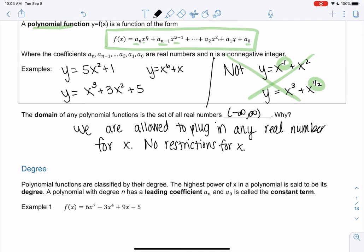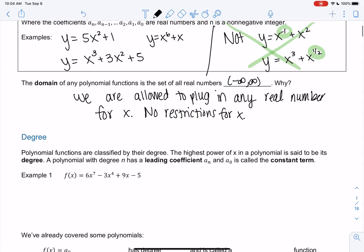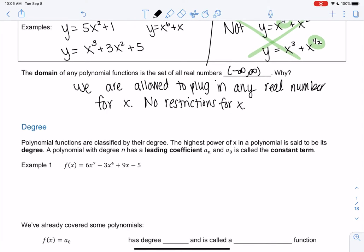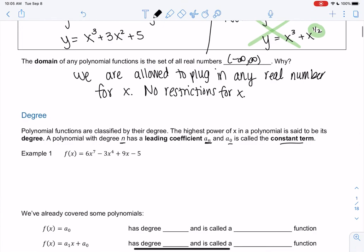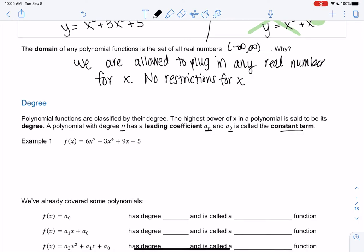Degree - we probably heard this in an algebra class. Polynomial functions are classified by their degree. It's the highest power of the polynomial. We also have a leading coefficient, which is an, the one with the n power. And a0 is called the constant term. I'm going to jump into an example because that makes more sense.